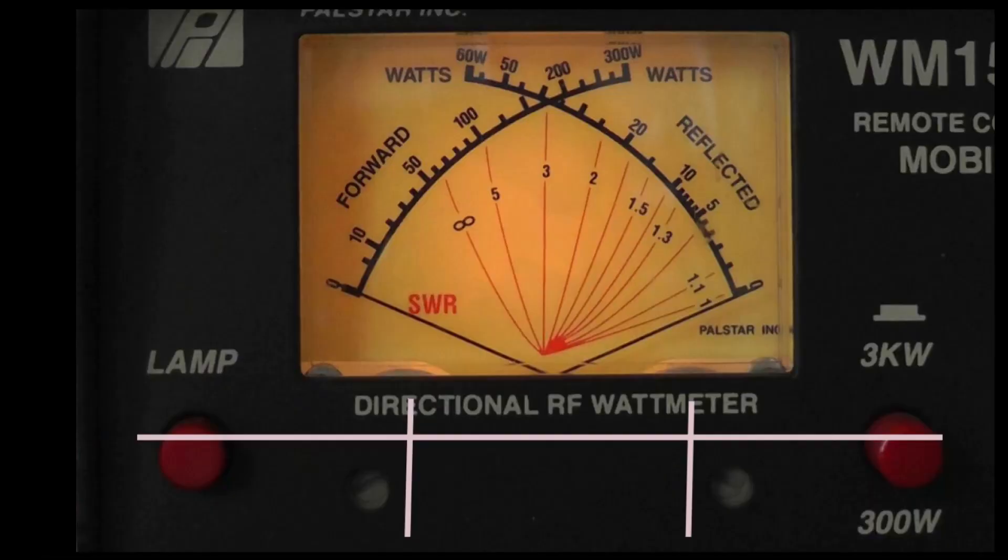What we're looking at here is a PALSTAR WM-150M. It is a typical cross needle SWR meter. It shows both forward power and reflected power and then the red lines in the middle are SWR. We're going to take a look at them and how to read them.